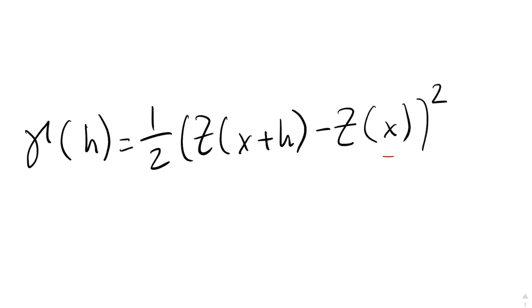So, in this function we start with a sample point x, and we consider the value of the random variable z at this location, which in the context of our course could be the elevation at the point x. Then, we consider a point x plus h, where h is a vector between x and a different sample point.